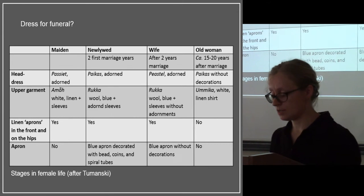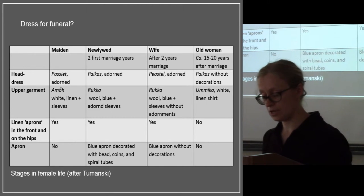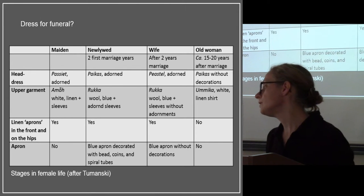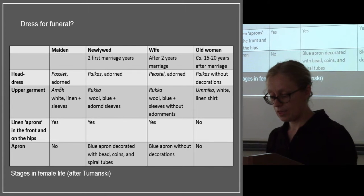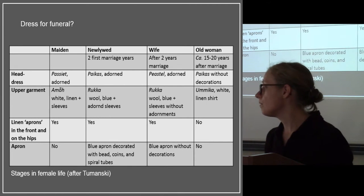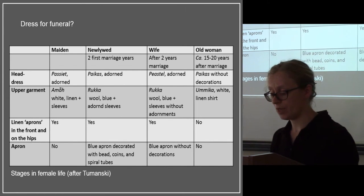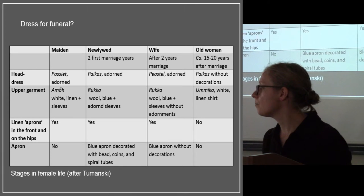According to Dumansky's description, women's life was comprised of different stages: maiden, newlywed, wife, and old woman. These categories are very closely related with fertility, and the transitions between these stages were also stressed by the clothing.